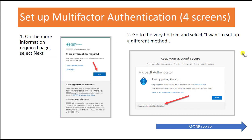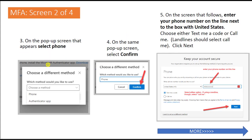Now we're going to complete the multi-factor authentication — there are four screens but it isn't as hard as it looks. After entering your password, you'll end up on a screen saying more information is required. Click next. On the next screen you'll see 'Keep your account secure' directing you to use the Microsoft Authenticator. For this tutorial, select 'I want to set up a different method' and click next. A pop-up will appear — you may need to click the down arrow. Select the phone, then hit confirm on the following screen.